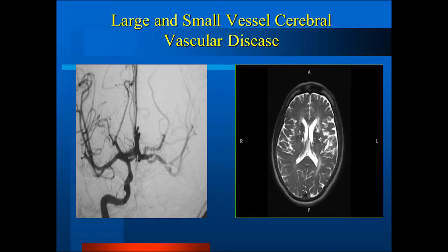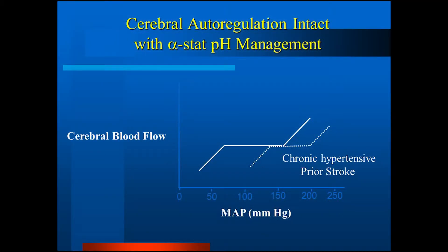As anesthesiologists doing primarily heart surgery, we have to deal with this problem of an increasing proportion of our patients having cerebral vascular disease. This led our group to ask how we manage these patients during surgery. One of the basic tenets of managing patients during cardiopulmonary bypass is that cerebral blood flow autoregulation remains intact if we use alpha-stat pH management, which is the standard. This means if autoregulation is intact, blood flow is kept constant over a range of blood pressures as long as you stay within the autoregulation range.